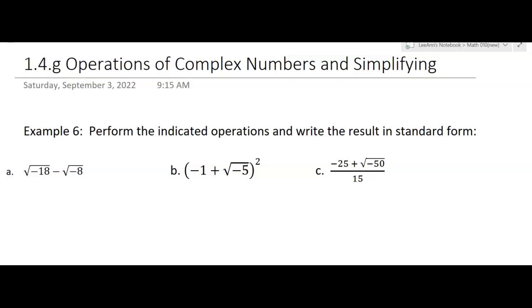Okay, so we're going to talk about operations with complex numbers and how to simplify them. Now let's say you had something like the square root of negative 4 times the square root of negative 9. We'll just say that one.